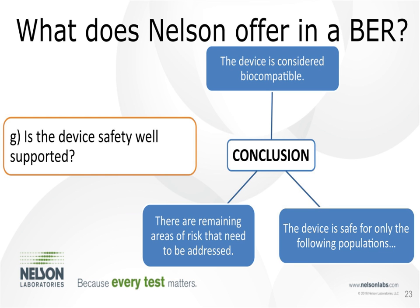At the end, we make the final conclusion. Examples include: the device is considered biocompatible — the end goal we're all hoping for — or there are remaining areas of risk that need to be addressed, or the device is safe only for specific populations. This last conclusion would come through a toxicological risk assessment, as Dr. Campbell discussed yesterday, where threshold levels are based on body weight and safety margins. If the compound is not safe for pediatric or neonatal populations, that would also be identified here. It's beneficial to reference your risk assessment and all testing to give a final conclusion, rather than leaving reviewers to find that information in individual reports.